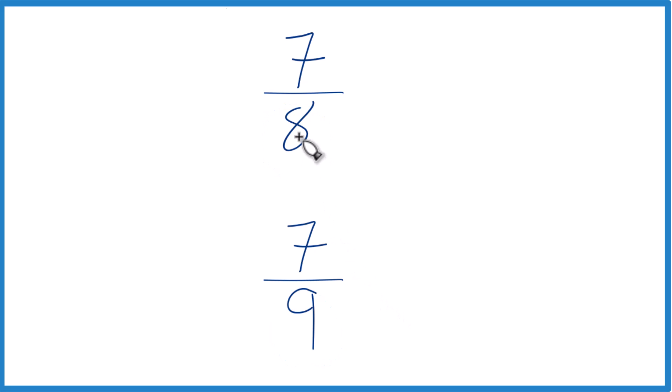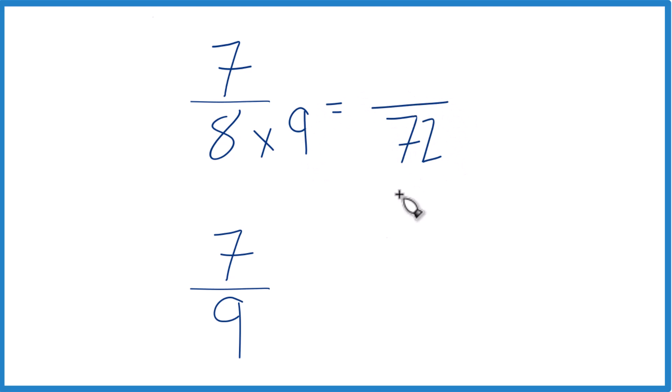So I'm just going to multiply 8 times 9. That would give me 72. Down here, I'll multiply 9 times 8. That also gives me 72.